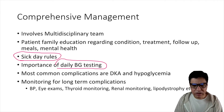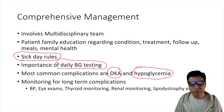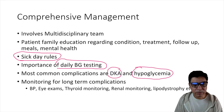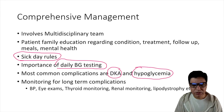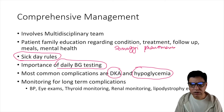The most common acute complications are diabetic ketoacidosis and hypoglycemia. Long-term chronic complications can include cataracts, microangiopathy, damage to renal blood vessels, and neuropathy — multiple organs can be affected.